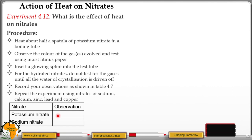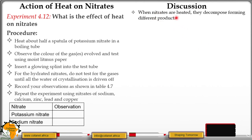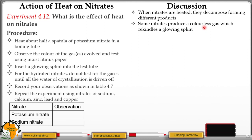In our discussion, when nitrates are heated they decompose forming different products. Some nitrates produce a colorless gas which rekindles a glowing splint. That colorless gas that rekindles a glowing splint must be oxygen. Remember from Form 1, when looking at the preparation of oxygen, you found that oxygen is tested by introducing a glowing splint. Since oxygen supports combustion, it is going to relight a glowing splint.